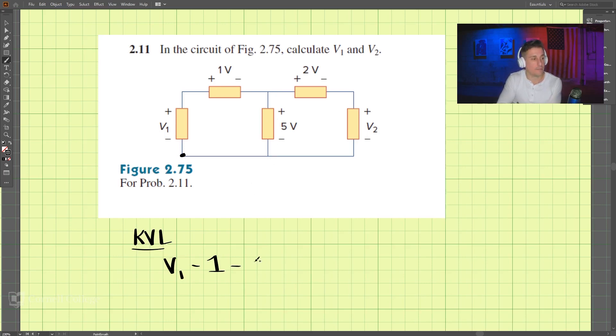So around this loop here, we get v1 minus 1 minus 5 equals zero, which means v1 is equal to 6 volts. That is one of our answers.